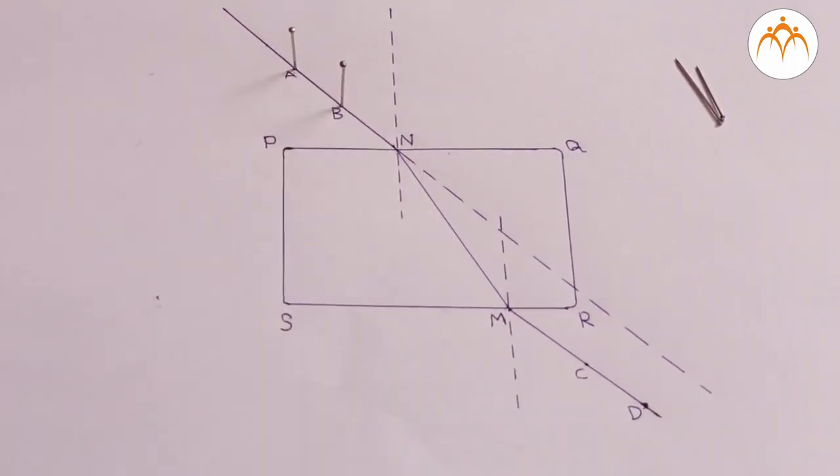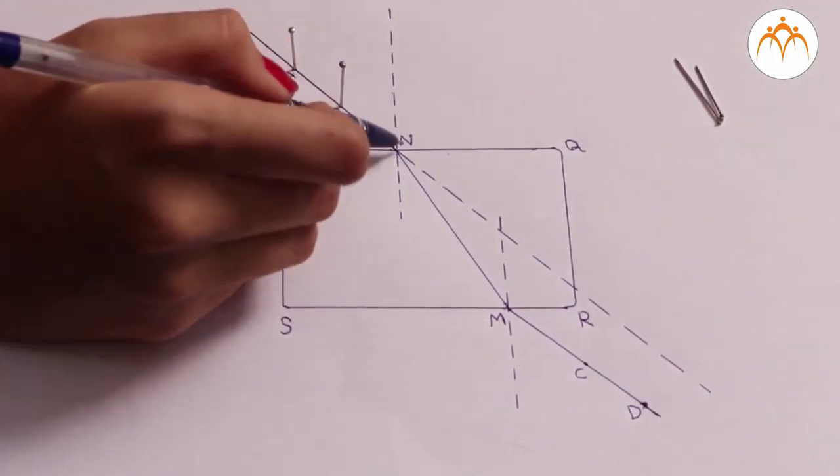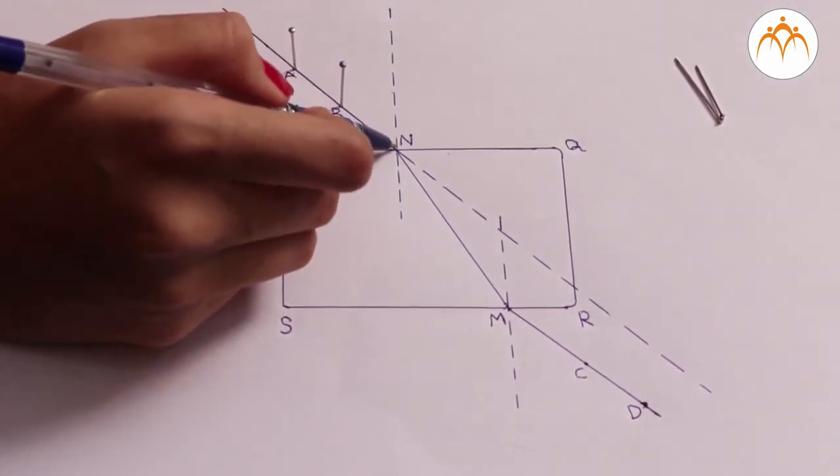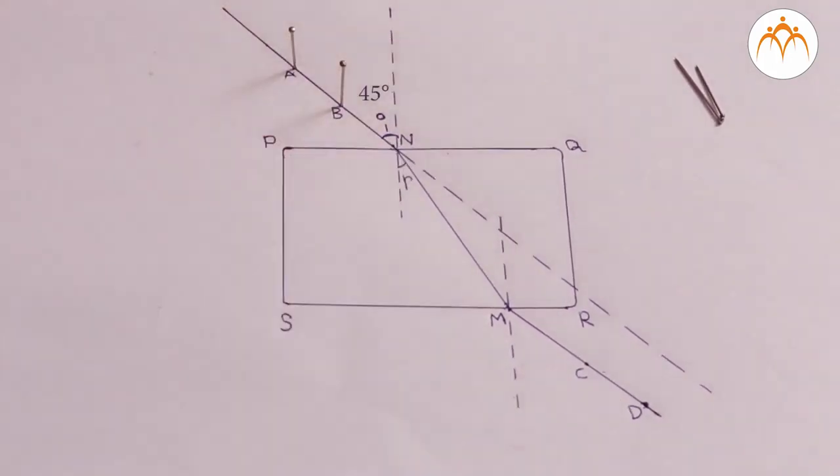Now, we can measure here the angles of incidence and refraction. Let us first look at the first boundary. The angle made by the incident ray with the normal is the angle of incidence I, which in this case is 45 degrees. The angle made by the refracted ray with the normal is the angle of refraction R, which is 30 degrees here.